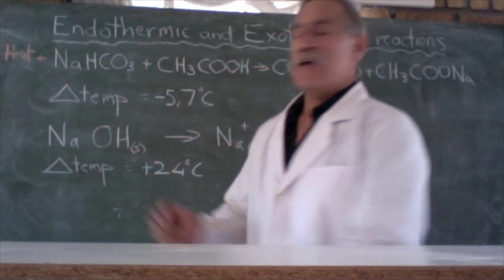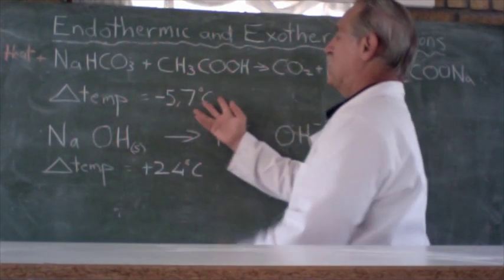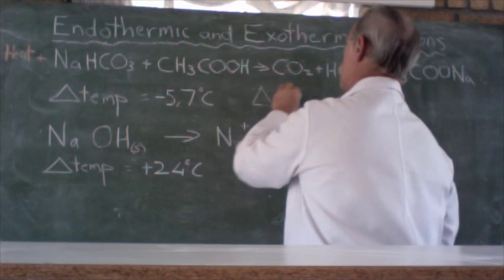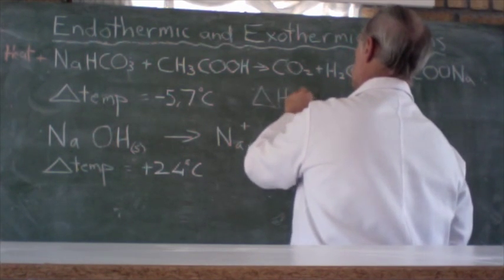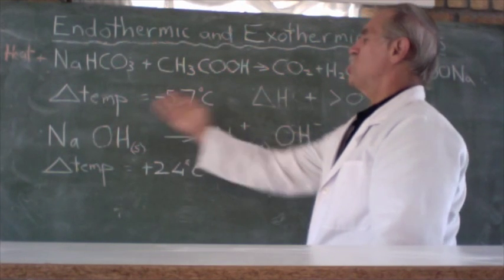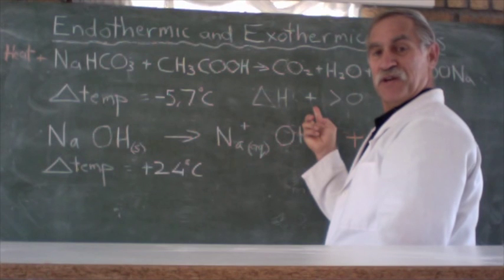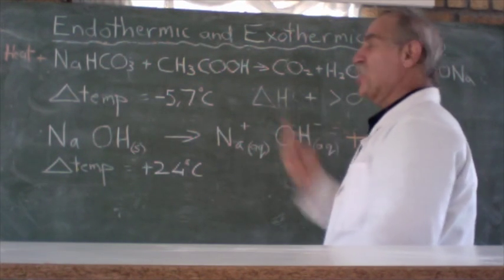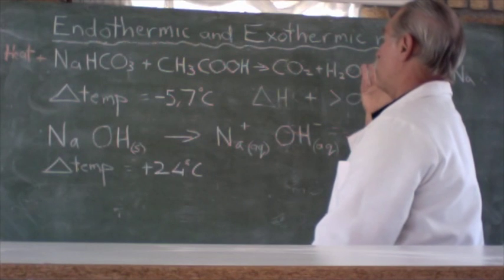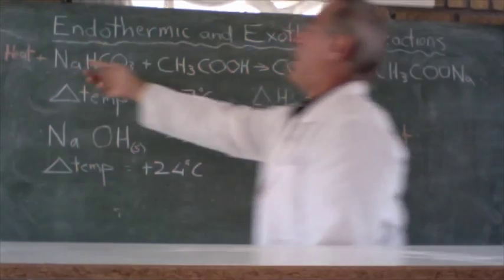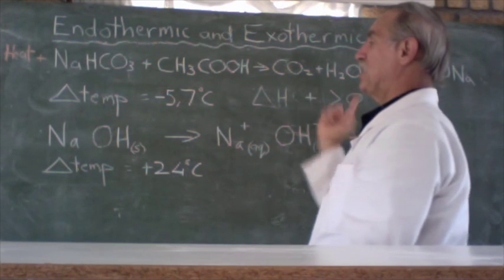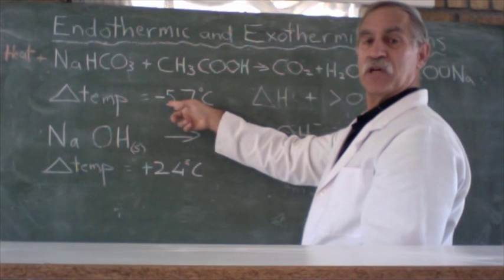Now quite interestingly, this case where it is an endothermic reaction, we say its delta H, the temperature change of heat, is positive or greater than 0. But look at that, the temperature change was negative but its change of heat was positive. How does that occur? Well think of it like this, looking from the point of view of the reaction. From the point of the reaction, it gained heat, heat went in, so its change of heat was positive because it gained heat.